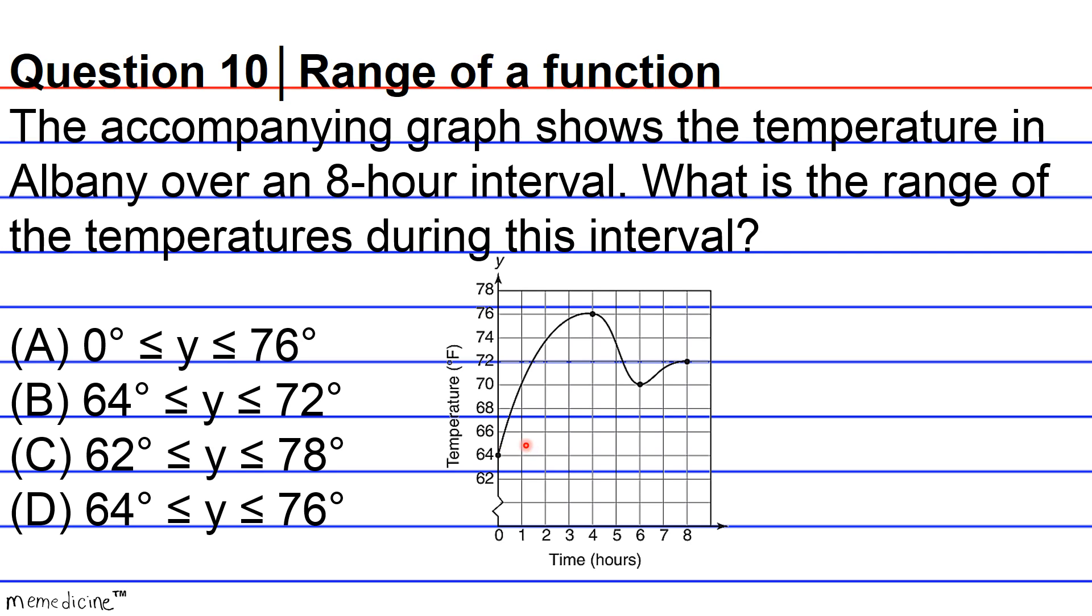And the minimum y value on this graph is obviously going to be 64 degrees Fahrenheit. And the maximum value occurs here at 76 degrees Fahrenheit. And additionally, the graph takes on all the y values between 64 and 76. Hence, the range is the interval between 64 and 76. This means that answer choice D is the correct answer choice. 64 degrees is less than or equivalent to y is less than or equivalent to 76 degrees.